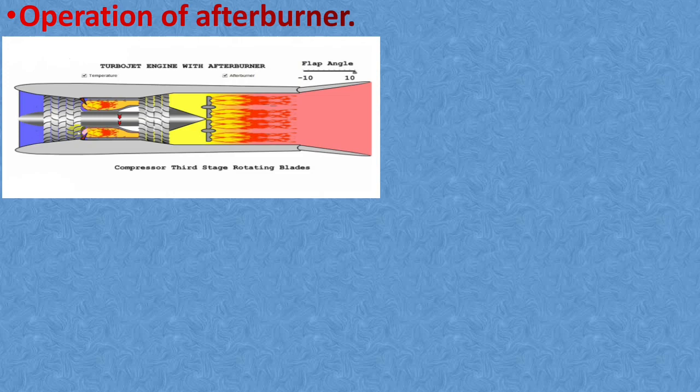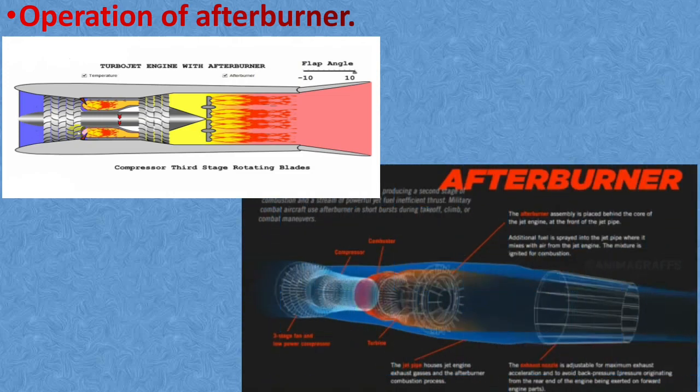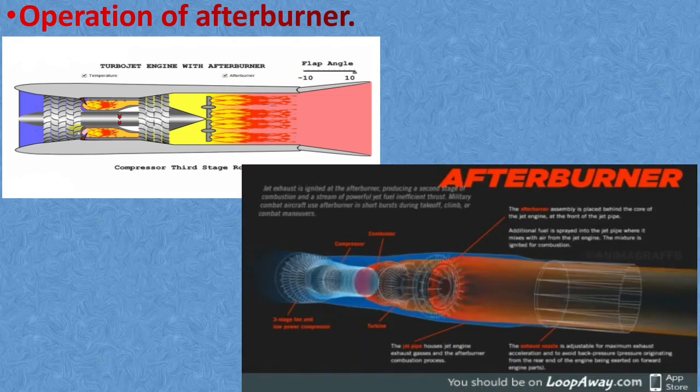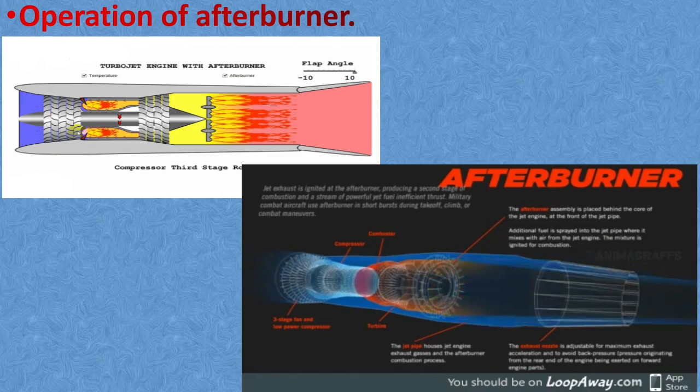Therefore, when an afterburner is being used, the area of the exhaust gas must be increased. As you can see here, when an afterburner is in use, the area of the propelling nozzle increases. If it is not, then back pressure would be created at the rear of the turbine which would increase turbine temperature beyond a safe level. So by increasing the size of the exhaust nozzle, exhaust gas temperature can be held to a tolerable limit.